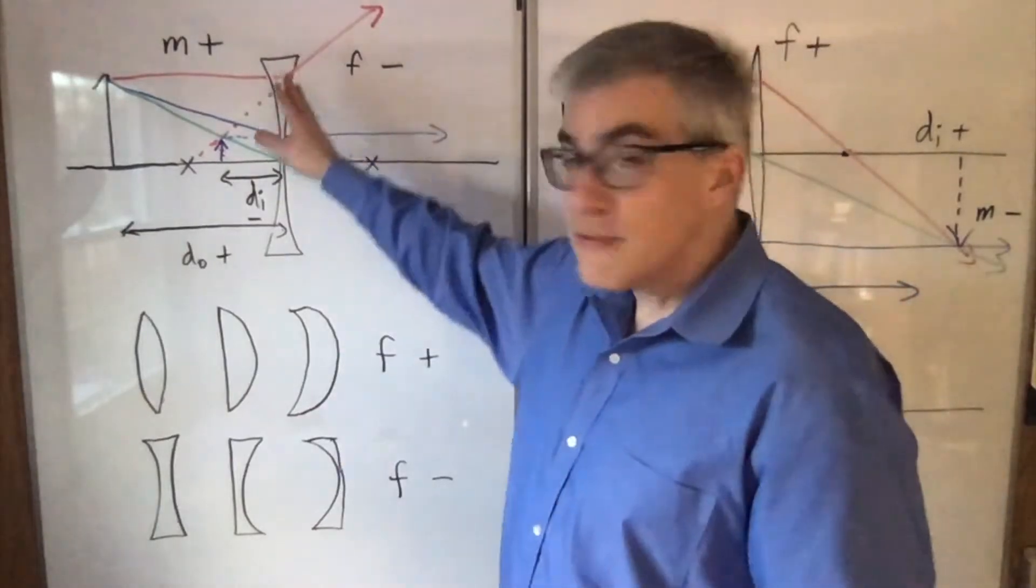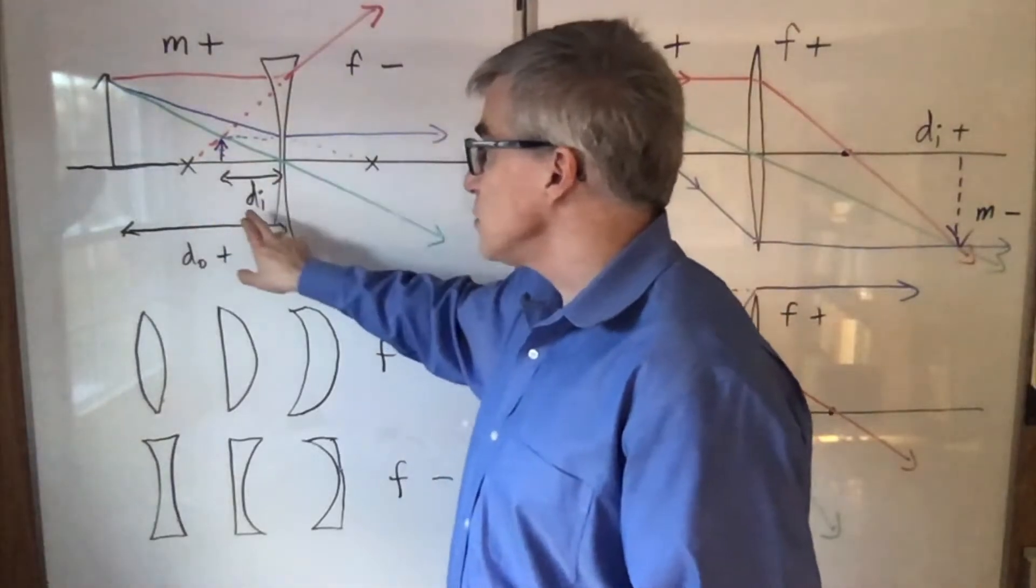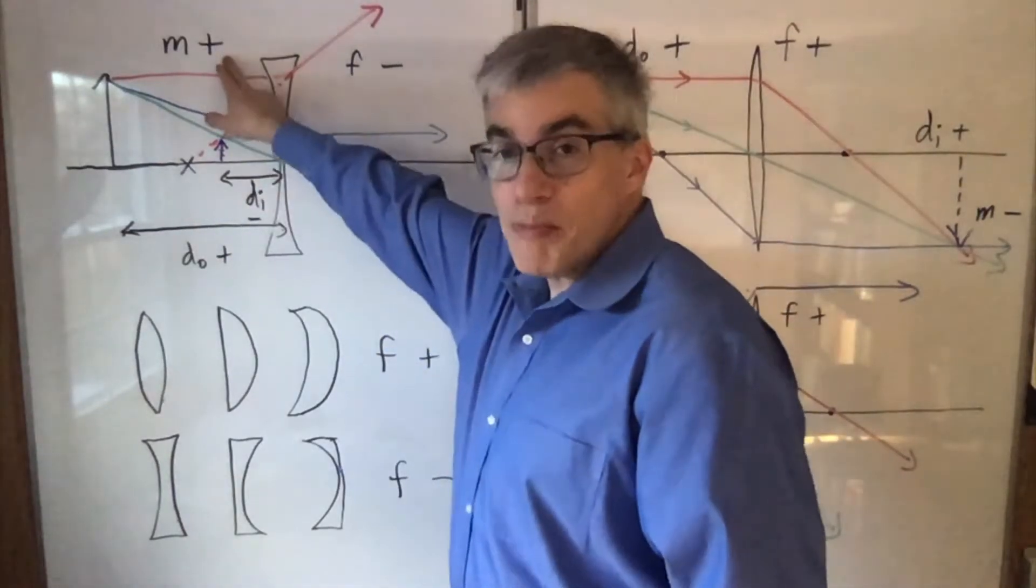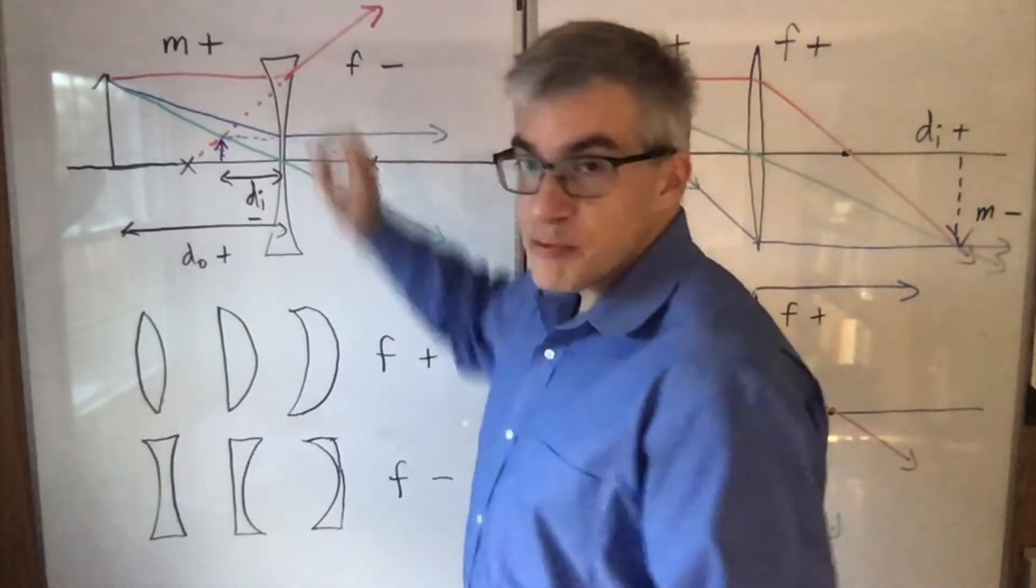So this is a diverging lens. The DO is positive, but the image is on the same side, so DI is negative. That leads to a positive magnification. Sure enough, it's right side up, and the focal length is negative because it's diverging.